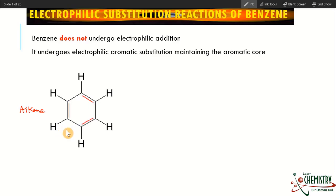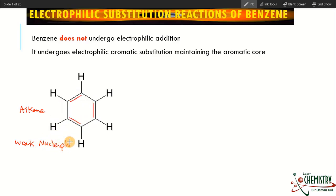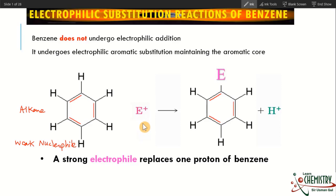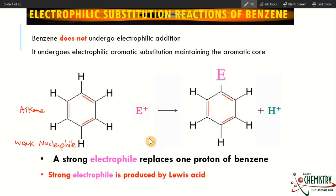The second reason benzene gives electrophilic substitution is that when the pi electrons get delocalized, they make benzene a weak nucleophile. This delocalized electron cloud behaves like a type of negative charge species. Whenever a strong electrophile reacts with benzene, it replaces one proton, giving an electrophilic substitution product. We need a strong electrophile, which is provided by a Lewis acid catalyst.